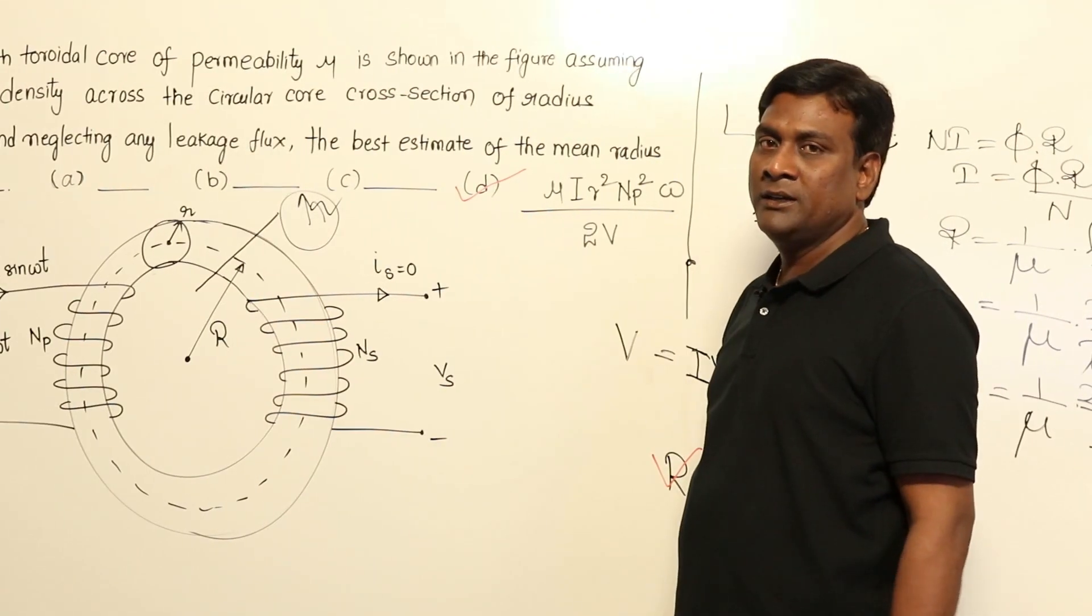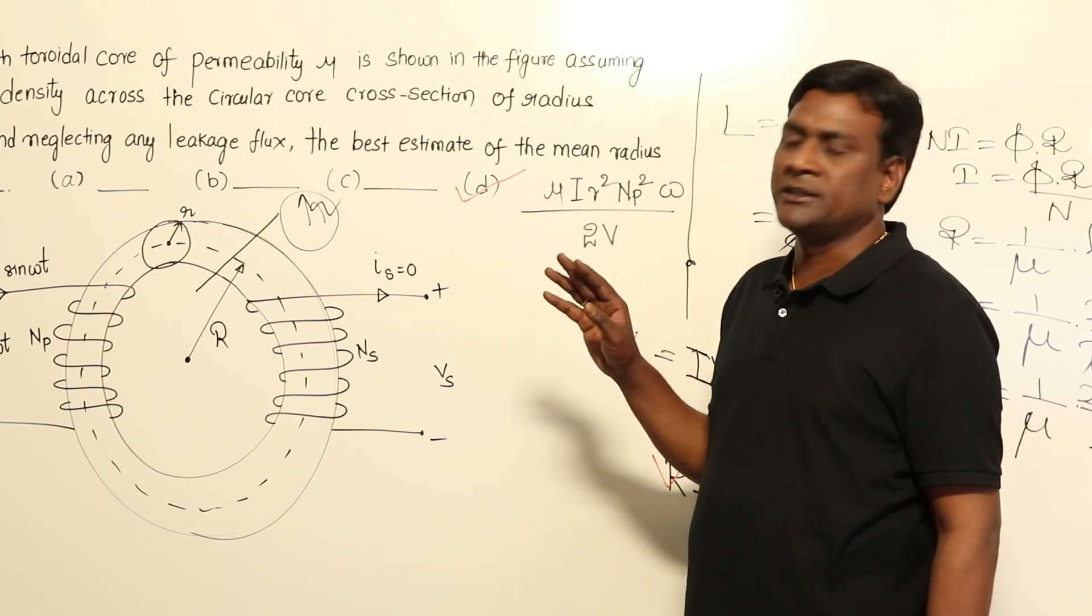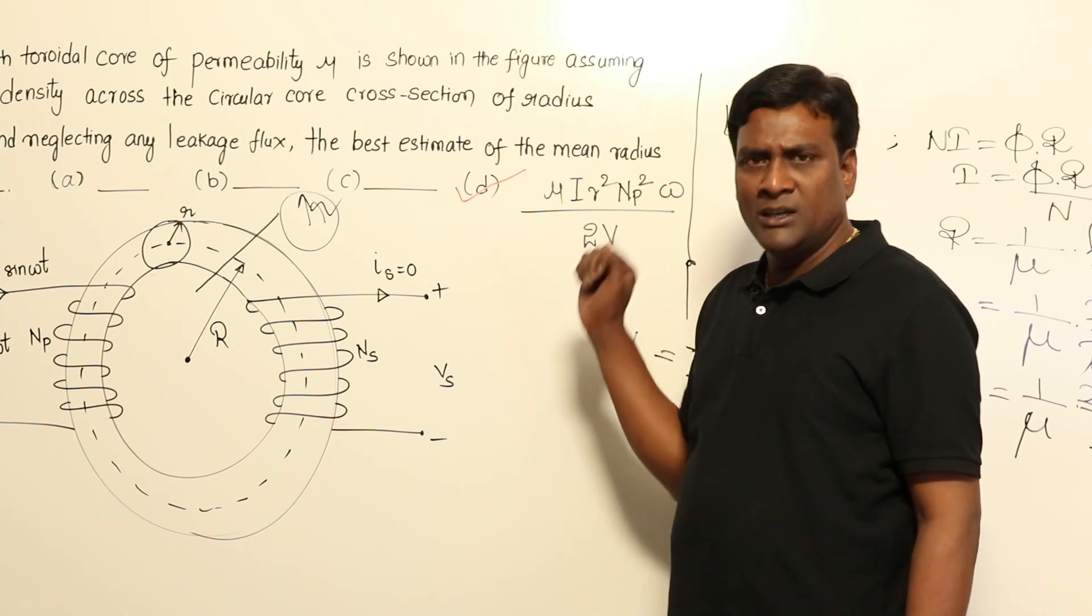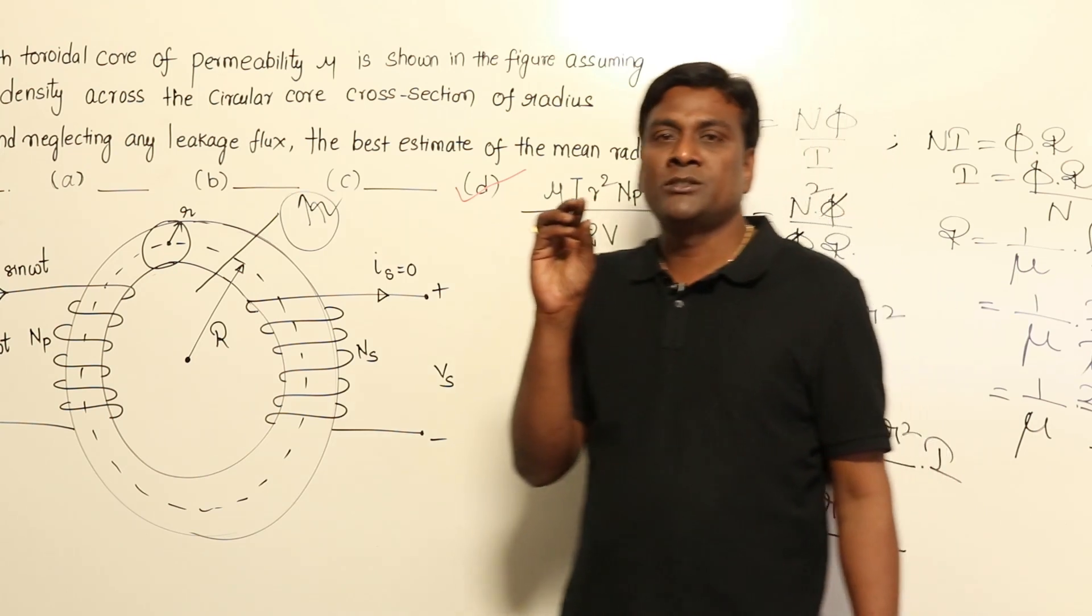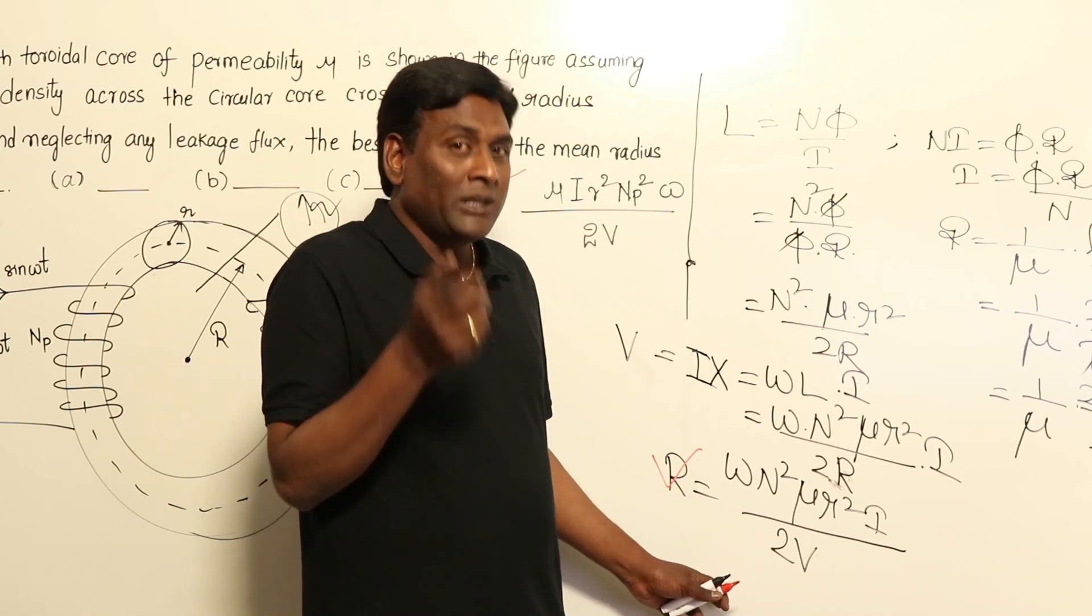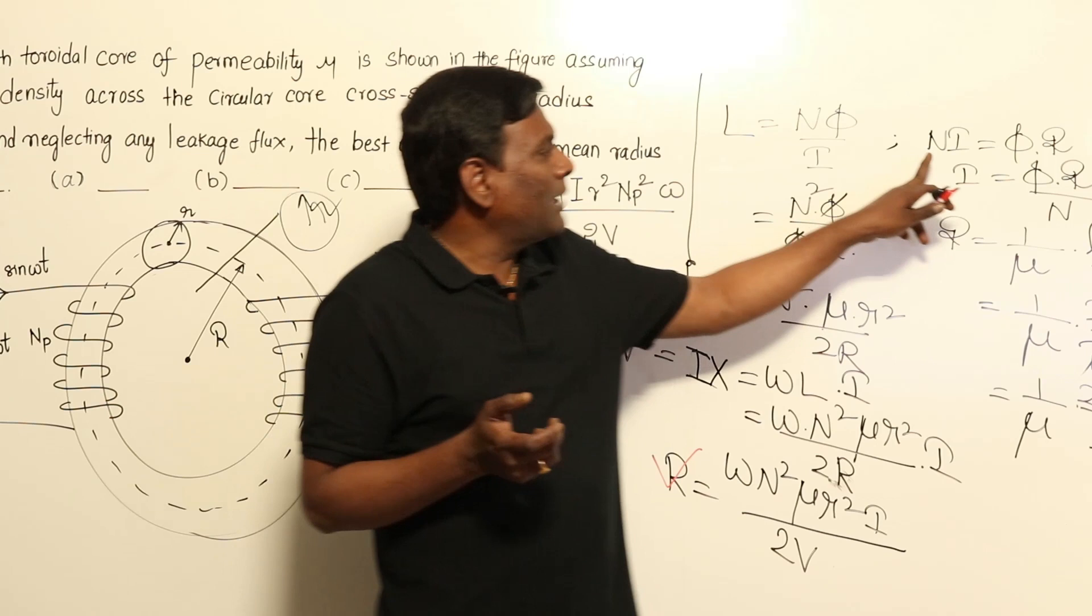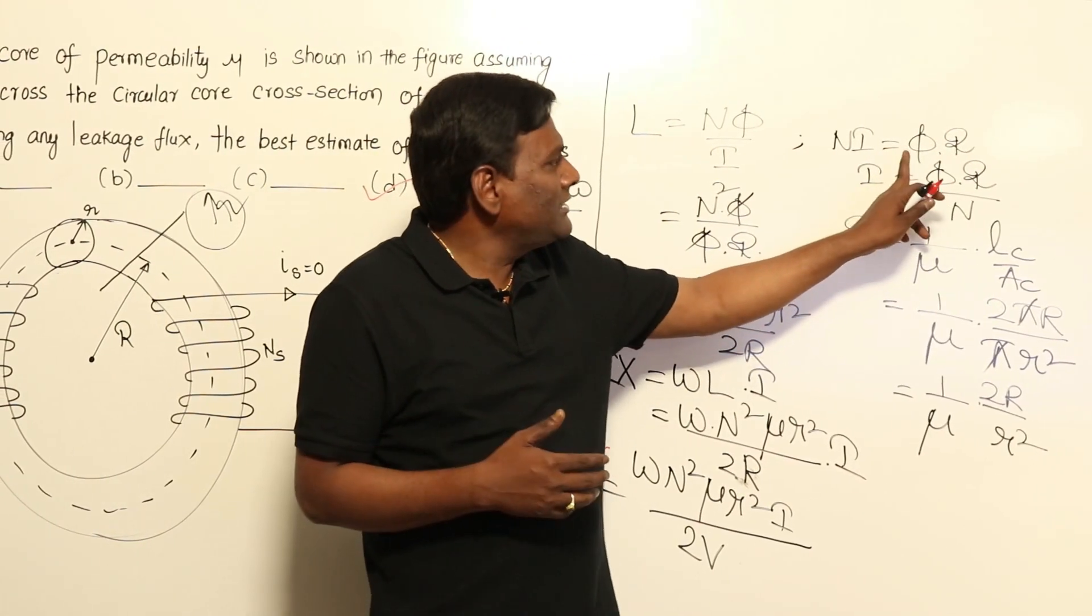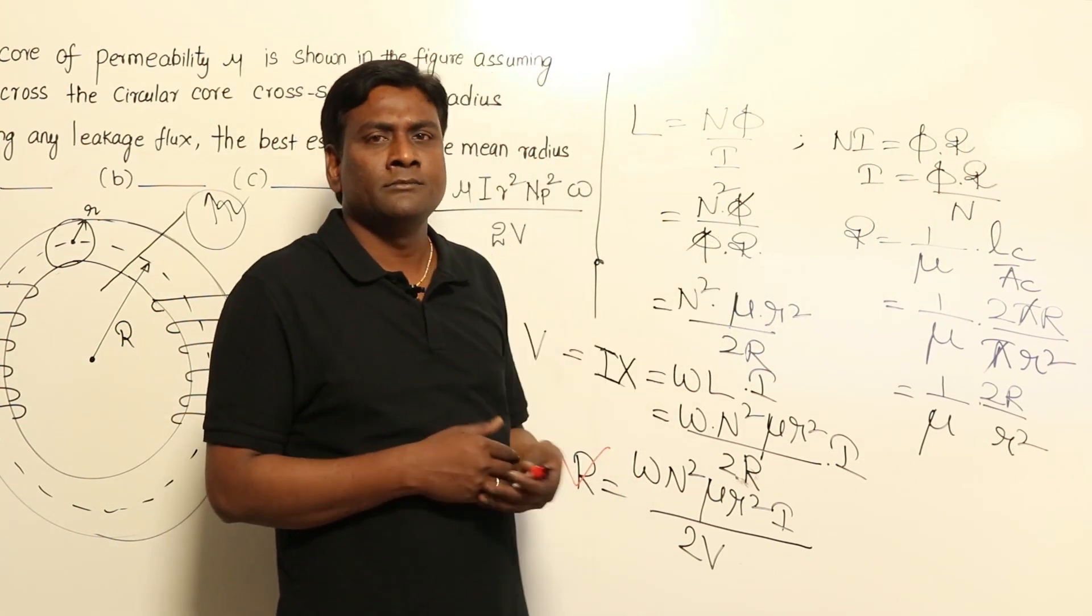The logic here is very simple. We should not be scared about machines. We did not remember this equation - of course these equations come in EM theory, but we need not remember anything. If your basics are strong, definitely you will get it. What equations did we remember? Simple: L = Nφ/i and MMF = flux × reluctance, or in electrical terminology, current × resistance = voltage. That's it.